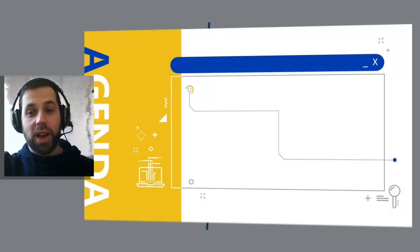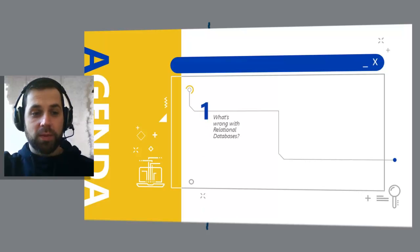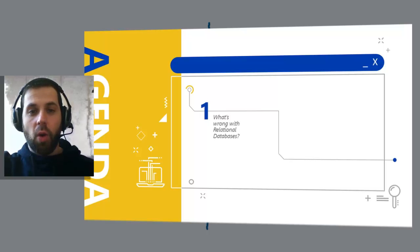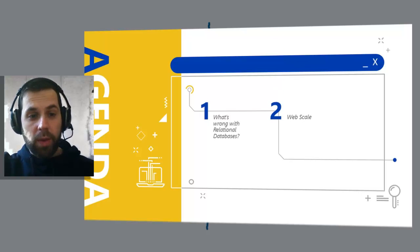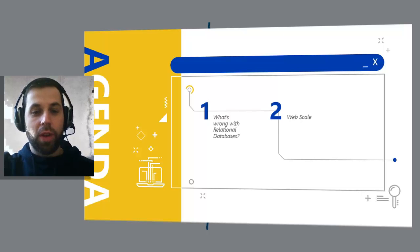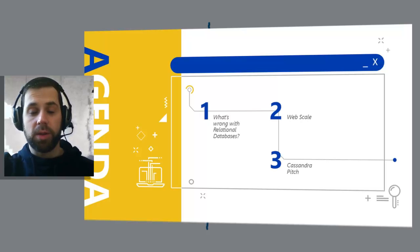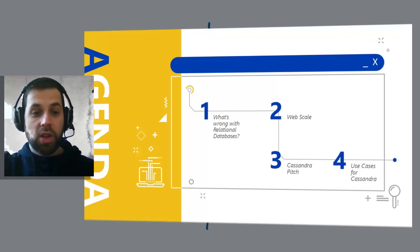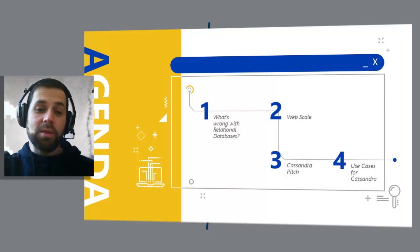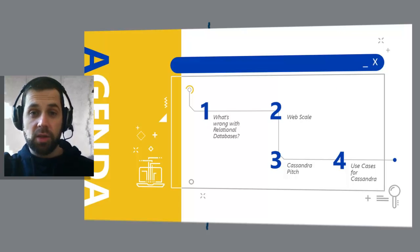Our agenda is divided into four sections. First, what's wrong with relational database? This is a good point to think about — why today we need to think in a different way. Second, web scale — how the phenomenal growth impacts our systems today. Third, the Cassandra pitch — the key points about what Cassandra is all about. Fourth, use cases for Cassandra — in which cases Cassandra will be a perfect fit for your applications.